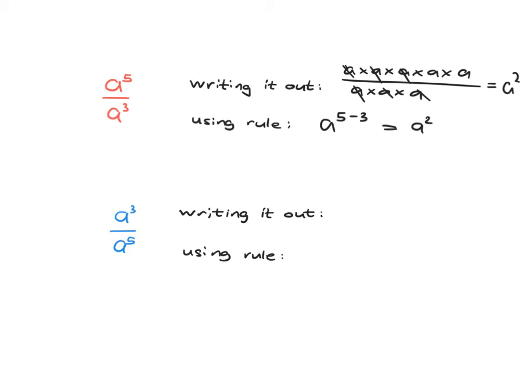Now if we look at a cubed over a to the 5, we're going to see how we can use that to understand what negative exponents mean. Writing it out like before, we'd have a times a times a at the top, and this time at the bottom is where you'd get your 5 a's. Then you cancel, and you can see that what you're left with at the bottom is just a times a, so you've got 1 over a squared.